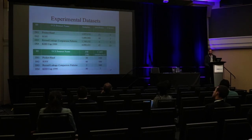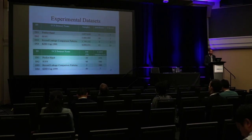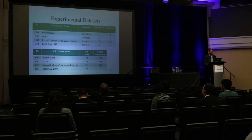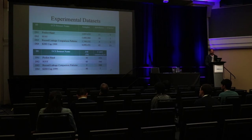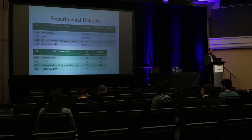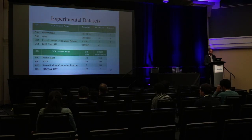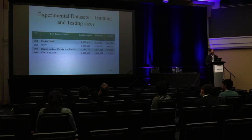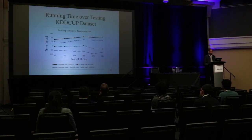For our experiments, we used four datasets from UCI that are considered big data. You can see their attributes and number of classes for each, optimized for memory constraints. The parameters M and min-bucket control the number of records in each leaf. We used two types of popular decision trees — J48 and CART — and split the data into training and testing sets randomly.